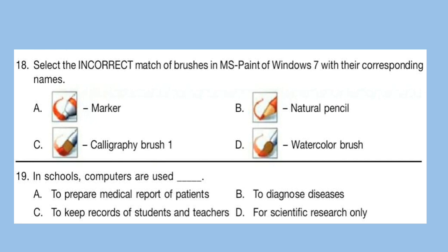Question 18: Select the incorrect match of brushes in MS Paint of Windows 7 with their corresponding names. Look at the options and select your answer. The correct answer is option C — Calligraphy brush 1.